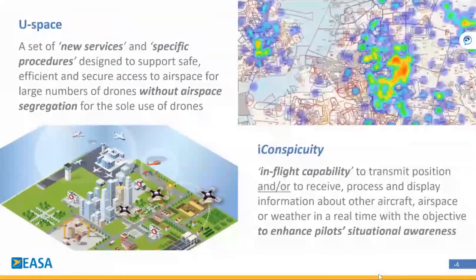What is high conspicuity? With this term, high conspicuity, we try to define an in-flight capability to transmit position and/or to receive, process, and display information about other aircraft, airspace, or weather in real-time, with the objective to enhance pilots' situational awareness.